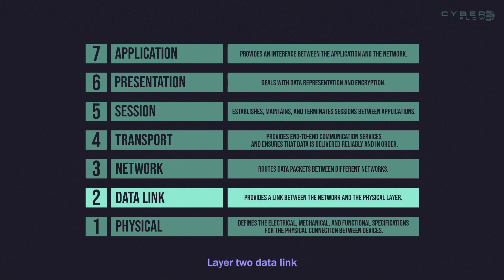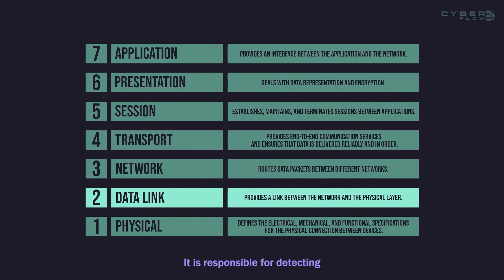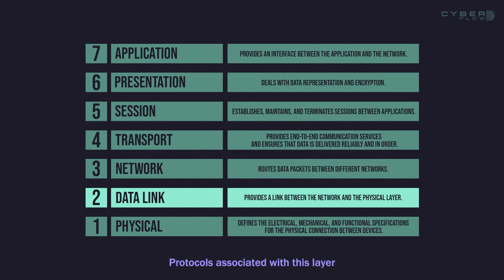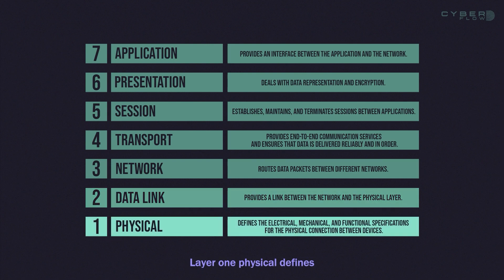Layer 2, Data Link, provides a link between the network and the physical layer. It is responsible for detecting and correcting errors that occur on the physical media.